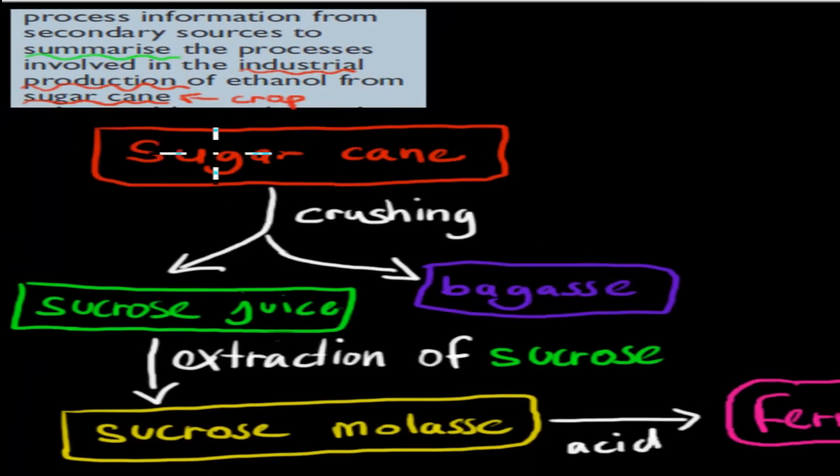Here we have the first step, which is we need to actually be able to get our sugarcane. We generally can get our sugarcane by harvesting it, which means we need some land, we plant some seeds and we get some sugarcane. Our next step is something called crushing. So we just crush it. We have this sugarcane which is a plant and we crush it into small pieces. And we get two different products.